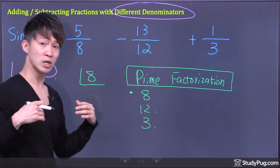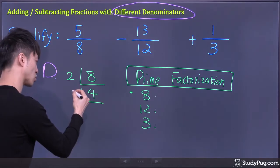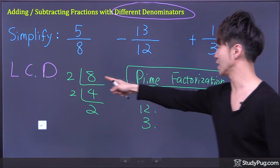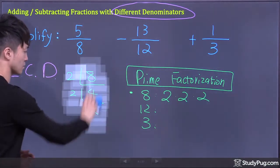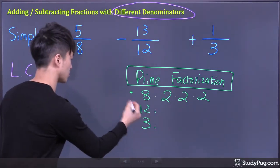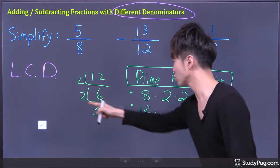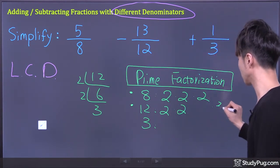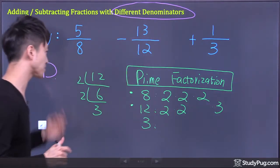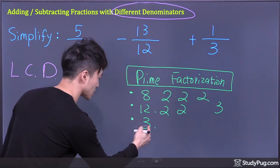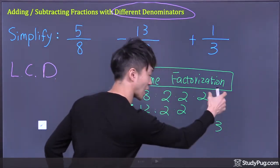Let's start with the first one. Eight is an even number, so it must be divisible by two, and two is a prime number. So eight divided by two, we get four. Four divided by two, we get two. The prime factorization for eight is two times two times two. Next, the prime factorization for twelve is two times two times three — I line up the same numbers together. For the last denominator, three, three itself is a prime number, so the prime factorization for three is just three.